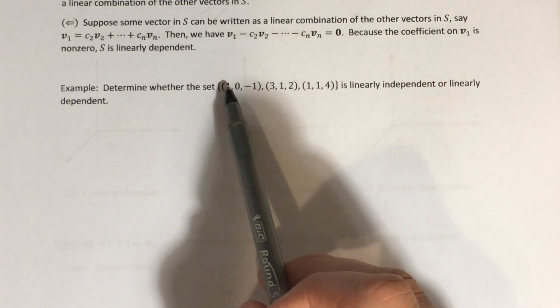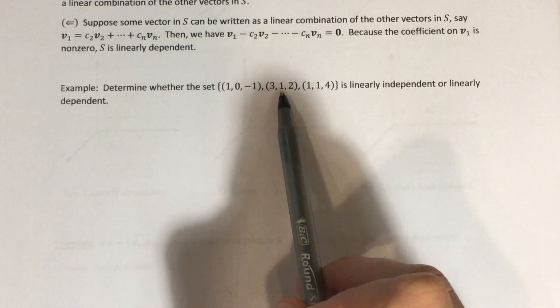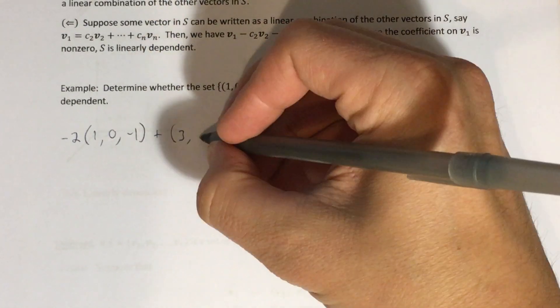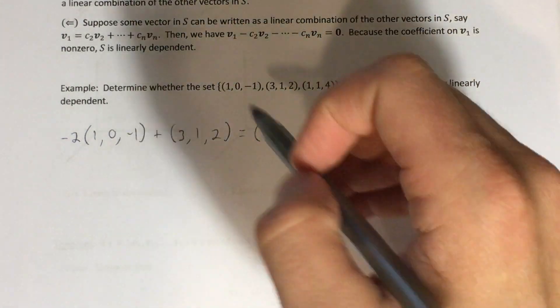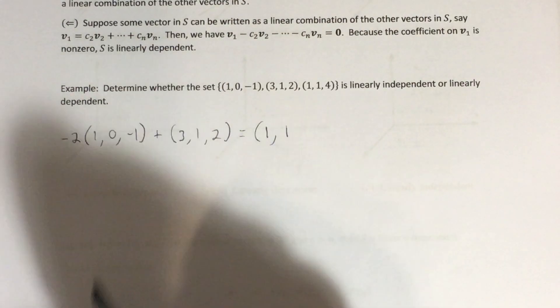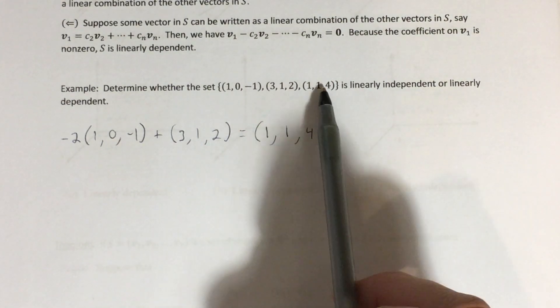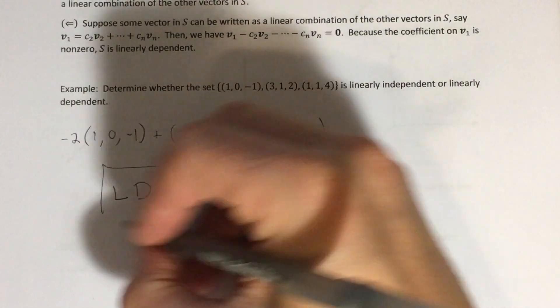Let's pick the first two vectors and see if their linear combination produces the third. I notice I have a 1 and a 3 in the first components. If I multiply the first vector by negative 2, that gives negative 2, and adding the second vector's component of 3 gives 1. So: negative 2 times [1, 0, -1] plus 1 times [3, 1, 2] gives first component 1, second component 0 + 1 = 1, third component (-2)(-1) + 2 = 4. The third vector in the set can be written as a linear combination of the other two — that means we have linear dependence (LD).